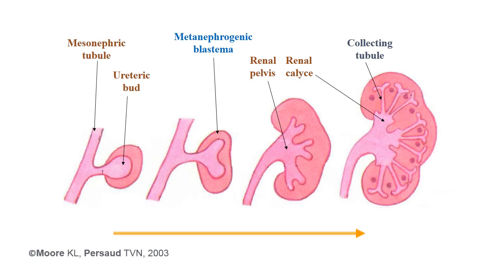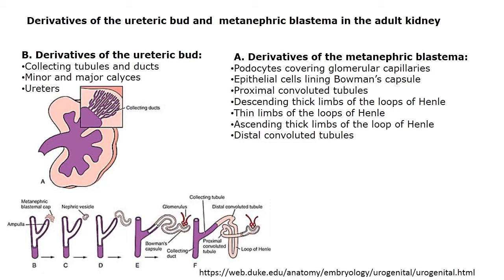On this slide you can distinguish the two origins: the mesonephric tubule and the ureteric bud, which develops and gives rise to the renal pelvis, renal calyx, and collecting tube. From the ureteric bud: collecting tubules and ducts, minor and major calyx, and the ureter.